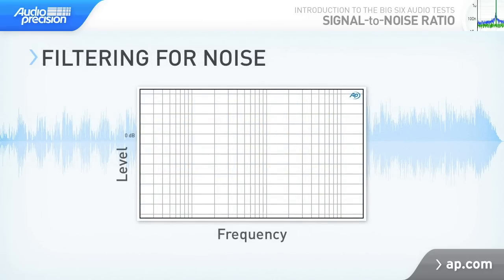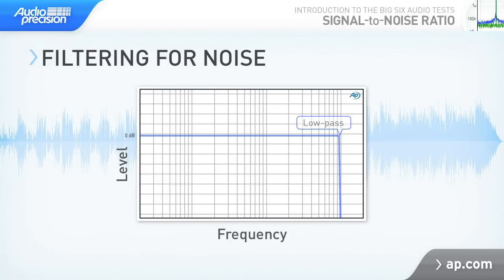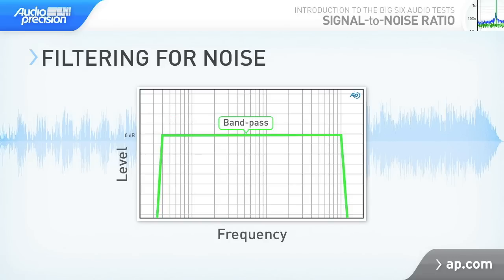Most noise sources are broadband, meaning that the noise extends across a wide frequency range. This means that a noise measurement made across a wide frequency range will measure more noise than a measurement made across a more narrow range. Band pass filtering and weighting are often used with noise measurements to ensure that the measurements are both appropriate and comparable. Band pass filtering limits both the low and high frequency range being measured, defining a measurement band pass. A typical measurement band pass for audio devices is 20 Hz to 20 kHz.